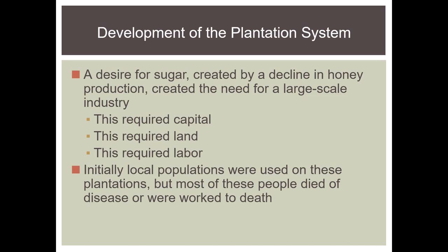Sugar is going to be a big reason slaves are brought into the New World. There's a decline in the production of honey, and there's a need for a large-scale industry — and sugar is going to become that large-scale industry. You have to extract the sugar from the cane. It takes agricultural know-how, industrial know-how, a lot of money, a lot of land, and then a lot of labor.